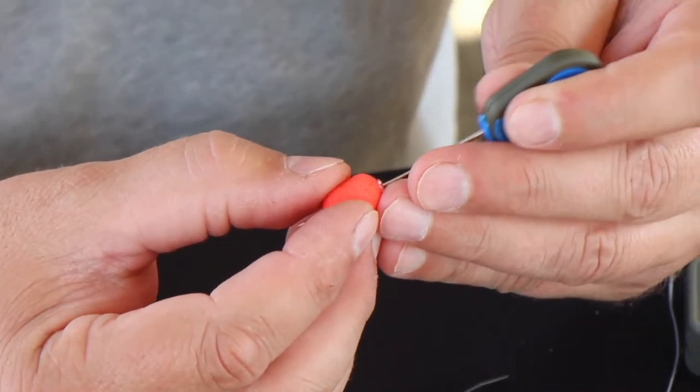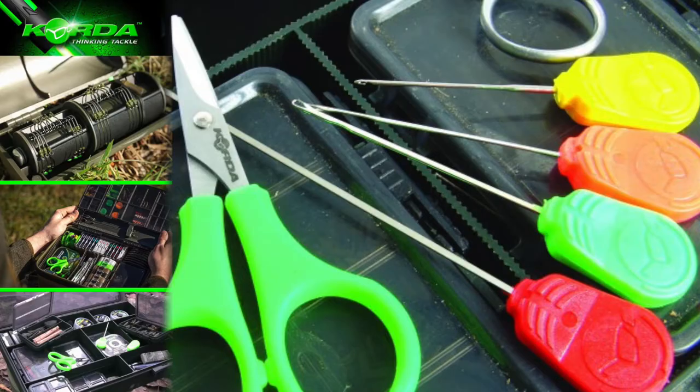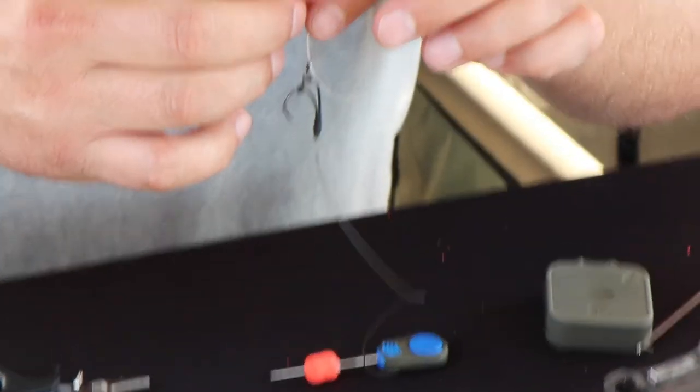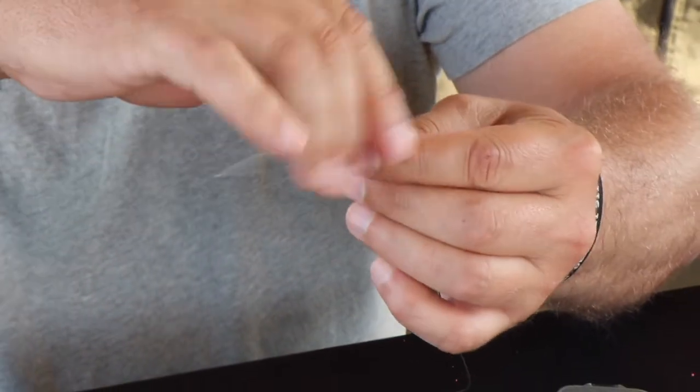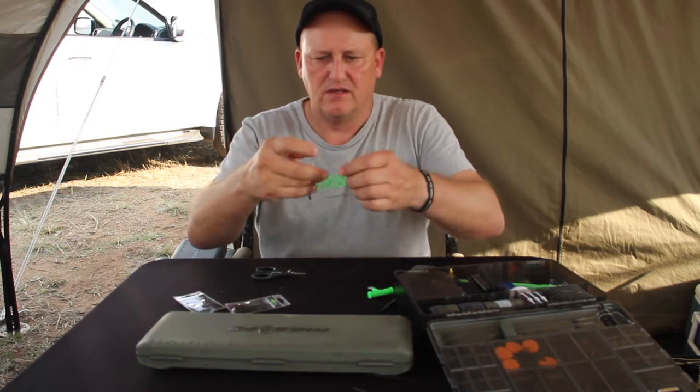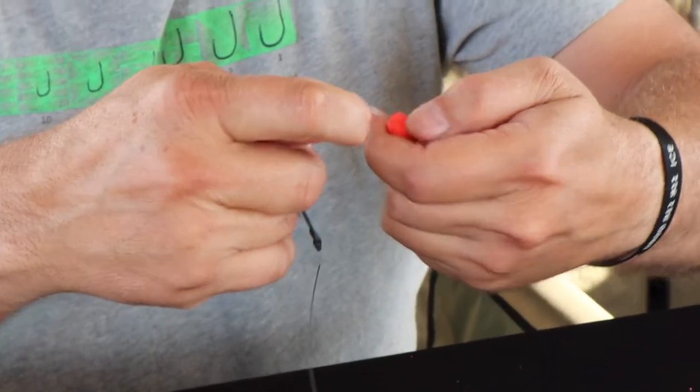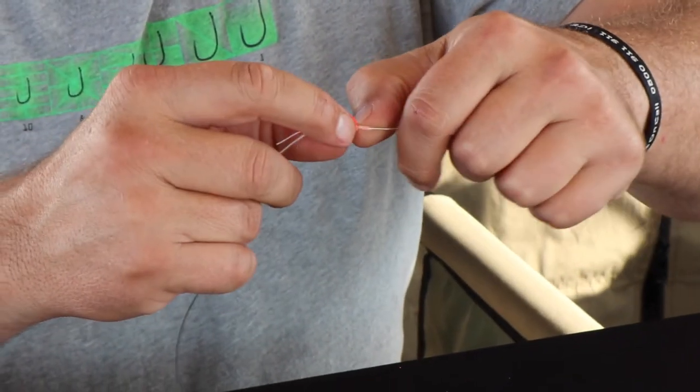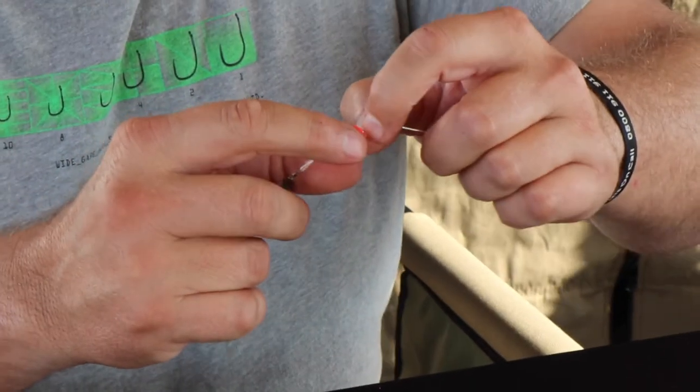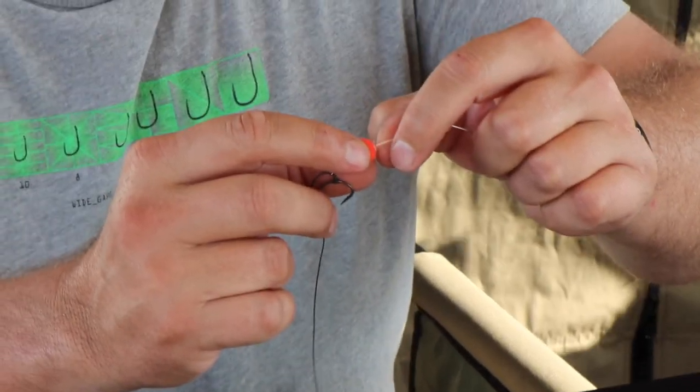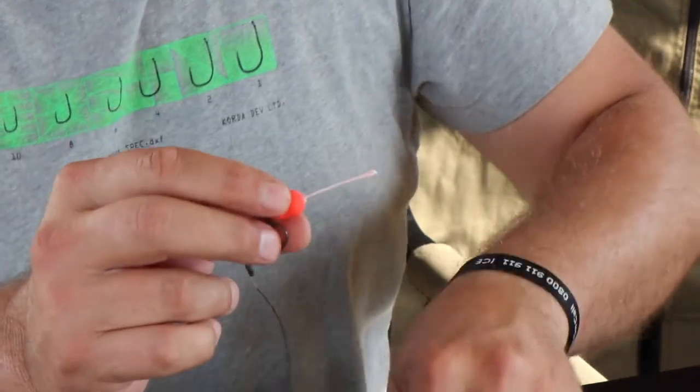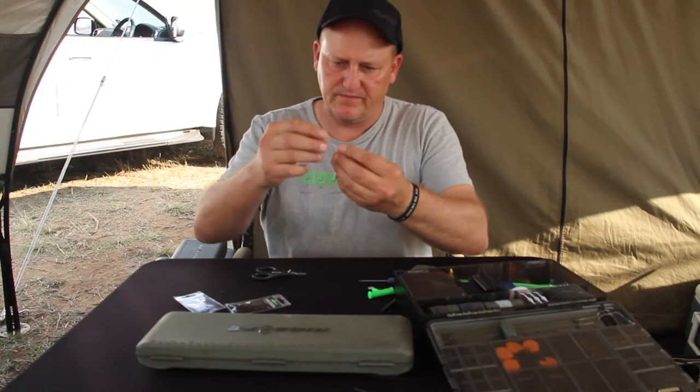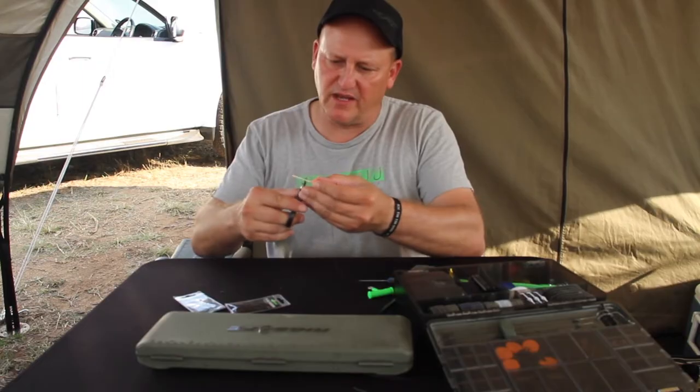Literally just push it in like so. Take your baiting needle. Push your baiting needle through. Take the floss, push it through the eye of the little swivel. And now I just thread my bait onto the floss all the way so that I just pull the first ring of the swivel inside.